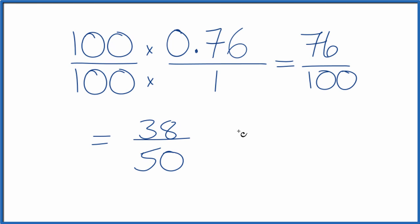And again, we have even numbers. So let's divide by 2 again. 38 divided by 2, that's 19. And 50 divided by 2, that's 25. And we can't reduce this any further.